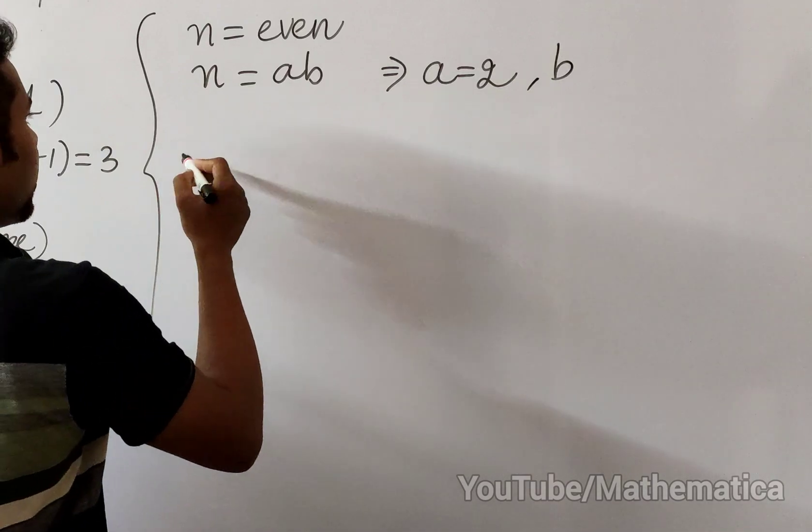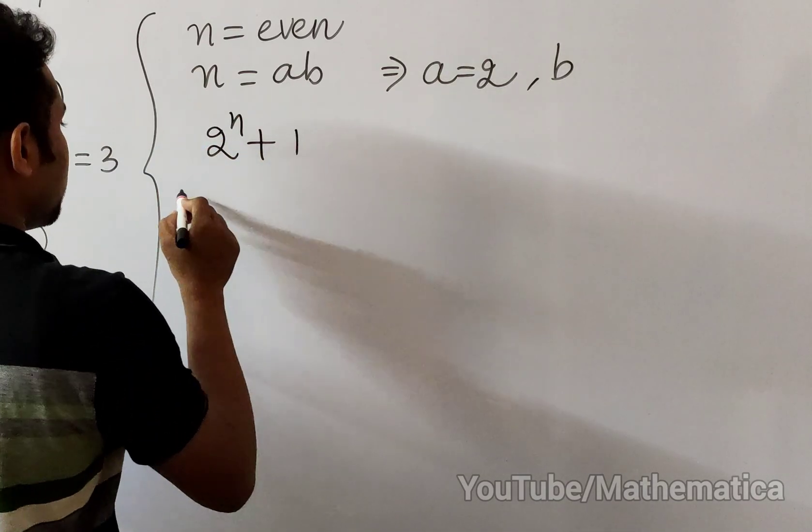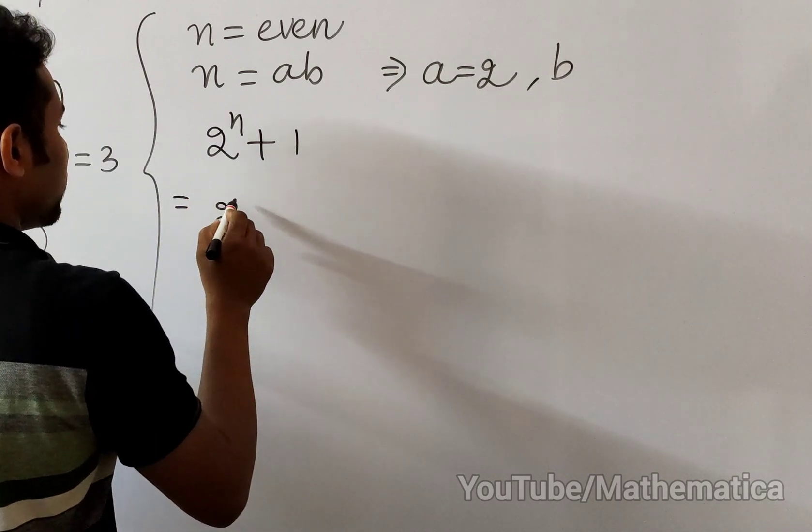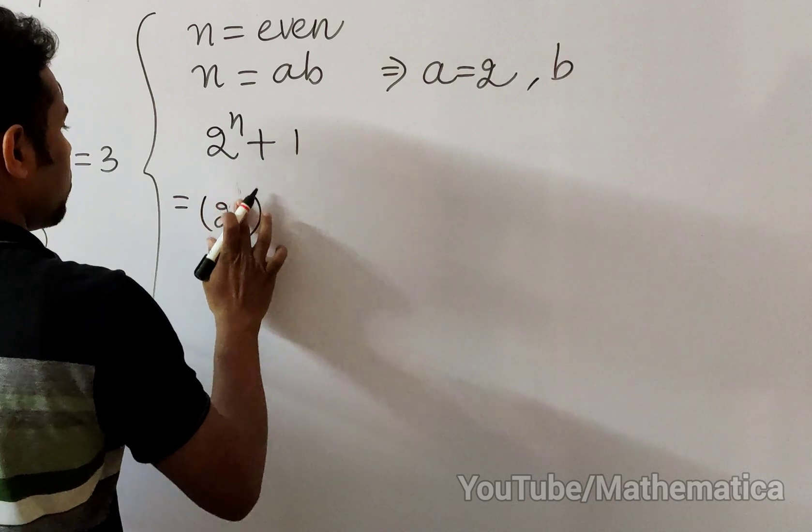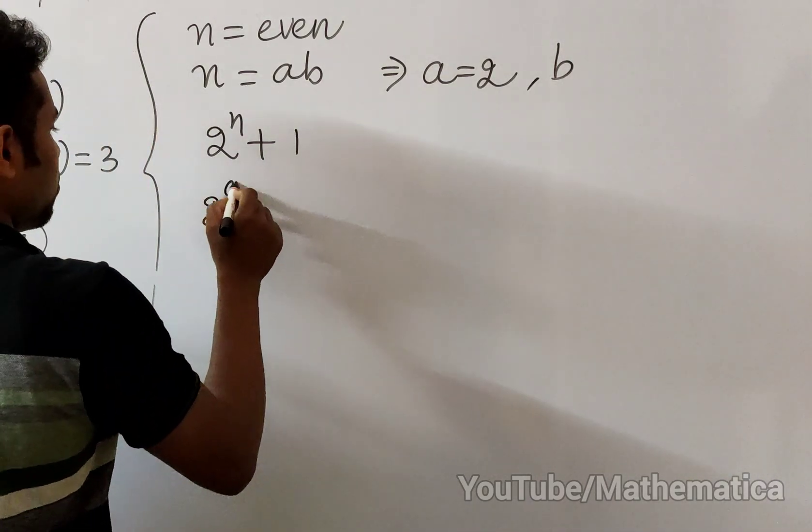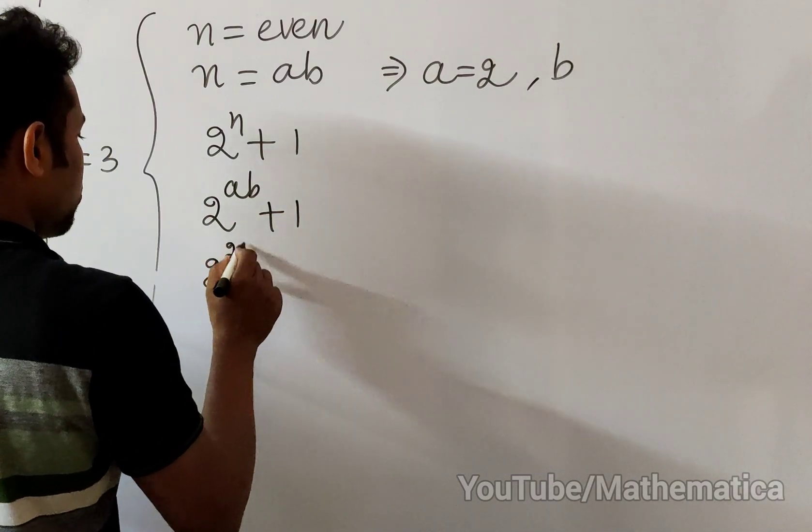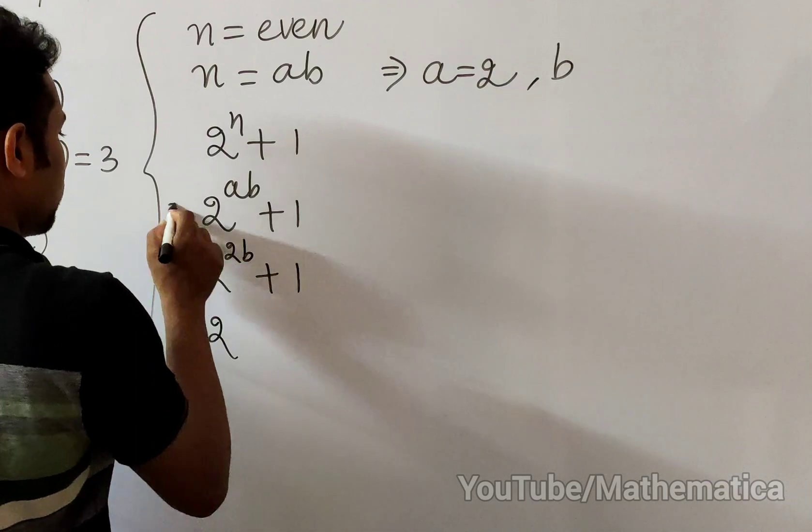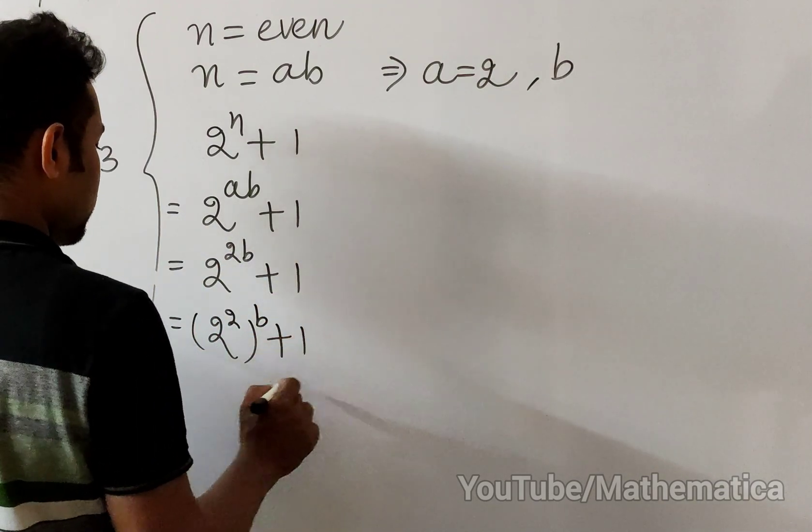Now, if you take 2^n + 1, then we can write 2^ab + 1, we can write 2^(2b) + 1.